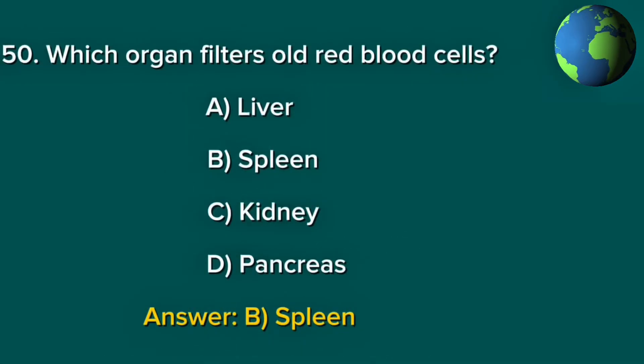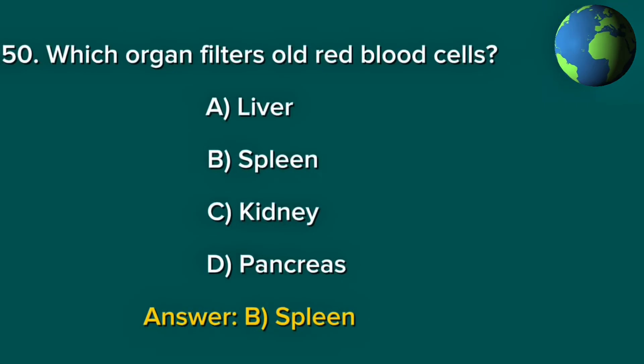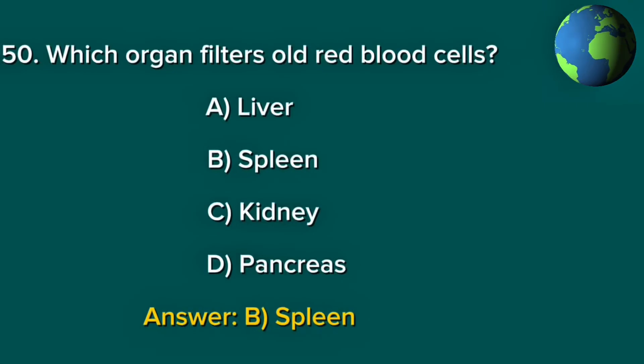Question 50. Which organ filters old red blood cells? A. Liver. B. Spleen. C. Kidney. D. Pancreas. Answer: B. Spleen.